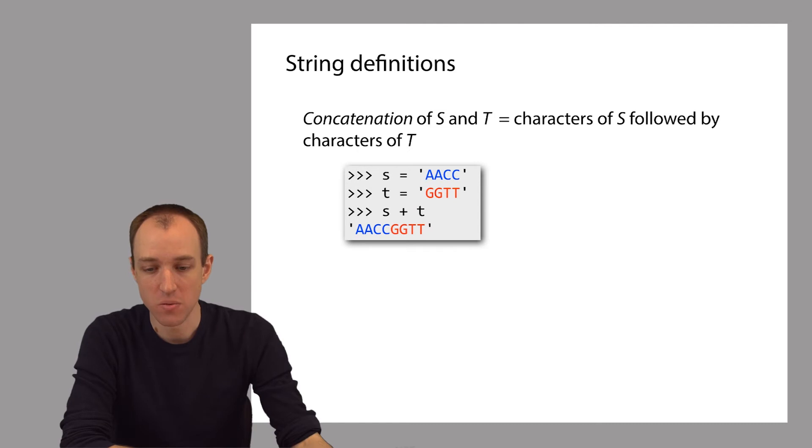The concatenation of two strings consists of the characters of the first string followed by the characters of the second string. We're just gluing the two strings together. In this example, S followed by T. In Python, we can use the plus operator to concatenate two strings.